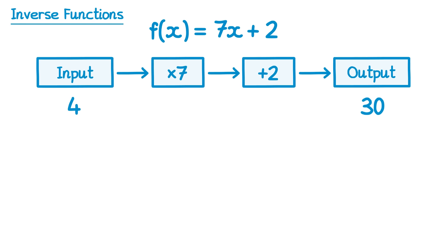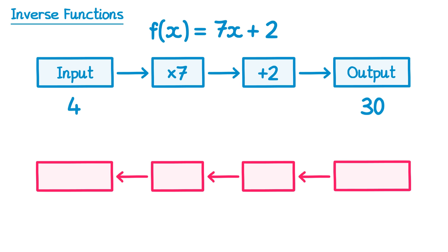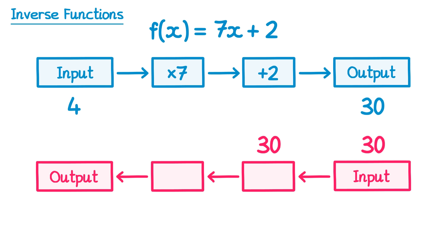When we talk about inverse functions we're looking for a function that reverses this process. So if we were trying to find the inverse function for this one, we could draw out another function machine but in reverse, with the input on the right hand side and the output on the left hand side. We need to create a function where we start with 30 but end up at 4, so we go backwards through this function.